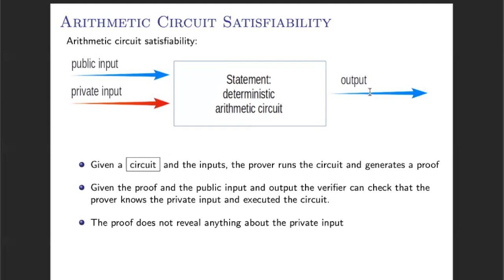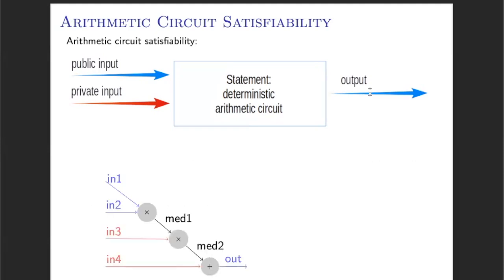The Zero Knowledge comes from the fact that from all this process, the verifier is not going to learn anything about the private inputs. The circuits that are used in order to model this statement are relatively simple. They contain two kinds of gates: multiplication gates and addition gates. In order to represent these circuits, Zero Knowledge protocols usually represent them using constraint systems.